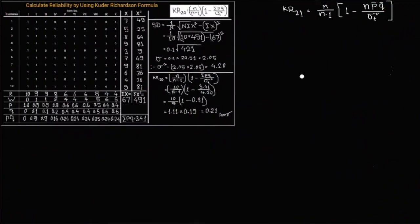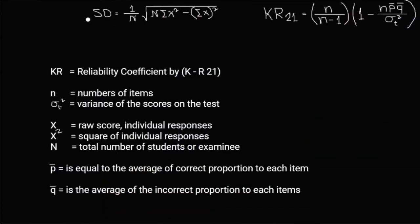Here is the previous video's worksheet. And here is the formula of KR21: n by n minus 1, 1 minus n p bar into q bar by variance of total score. p bar is equal to the average of correct proportion to each item and q bar is the average of the incorrect proportion to each item. So let's go back to our worksheet.